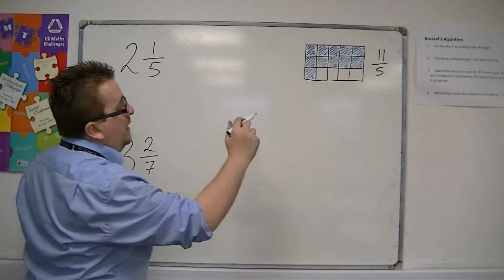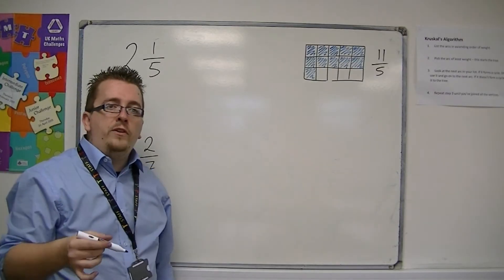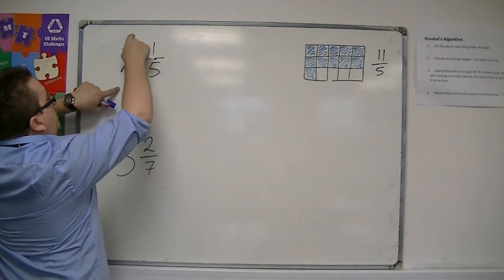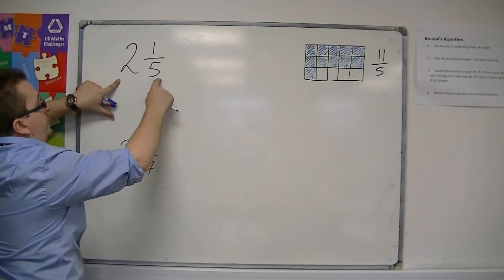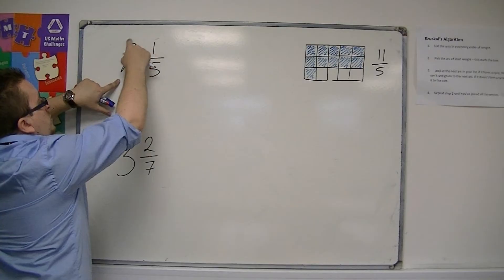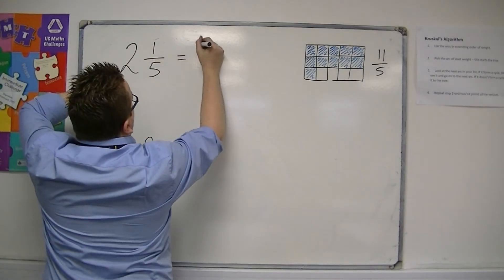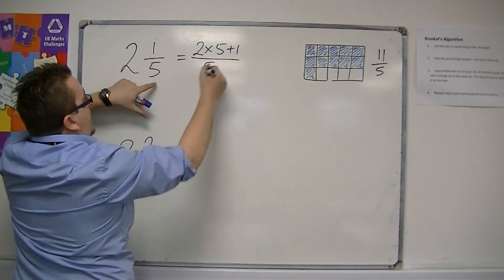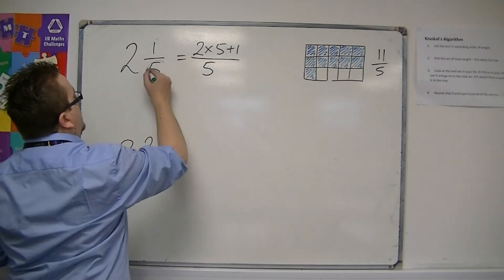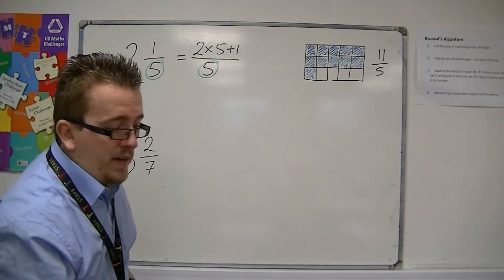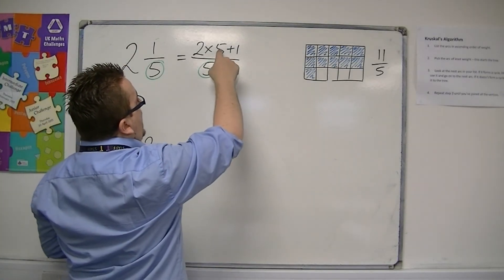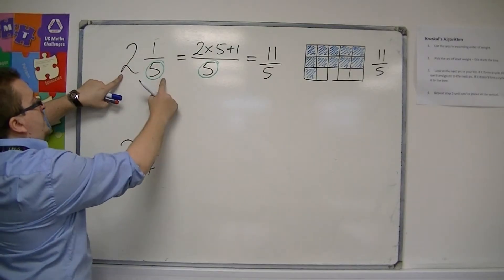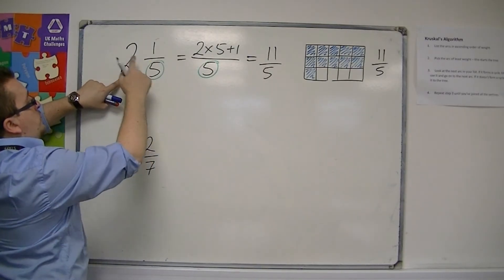So how can we get to that without having to draw a little diagram every single time we do one of these problems? What you can do is multiply the whole number, the 2, by the 5 and then add the 1. So, 2 times 5 plus 1 over the 5. As they did in the previous video, the denominators stay the same. And you get 2 times 5 is 10 plus 1 is 11 over 5. So you multiply the large number by the denominator and add the numerator. So, 2 times bottom plus top.